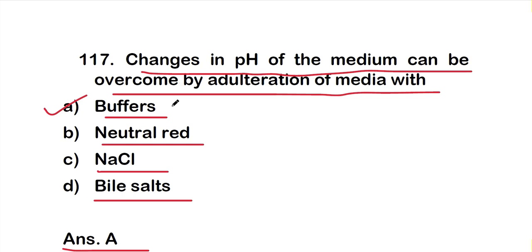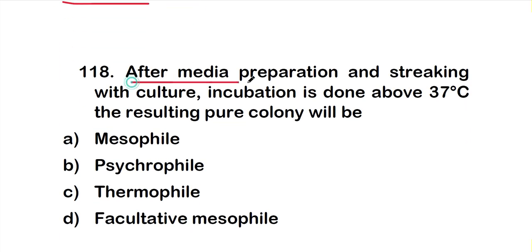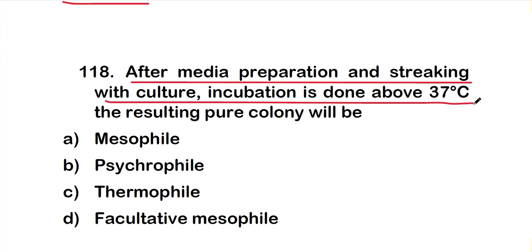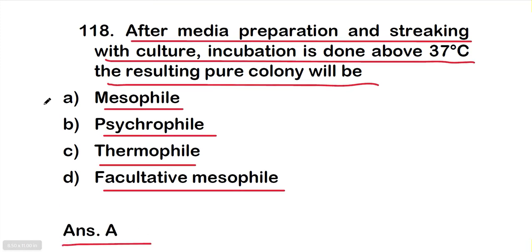Question number 118: After media preparation and streaking with culture, incubation is done above 37°C. The resulting pure colony will be Option A: mesophile, Option B: psychrophile, Option C: thermophile, or Option D: facultative mesophile. The right answer is Option A — mesophile. After incubation above 37°C, the resulting pure colony will be mesophile.